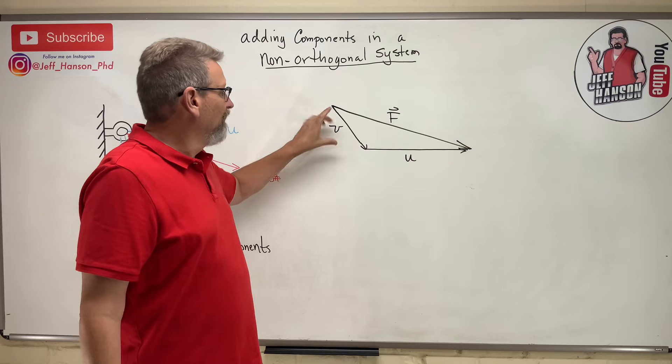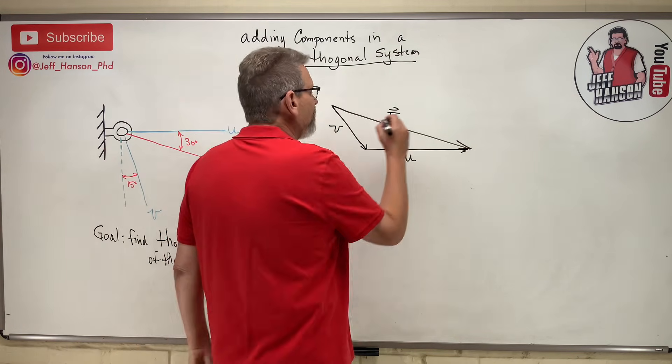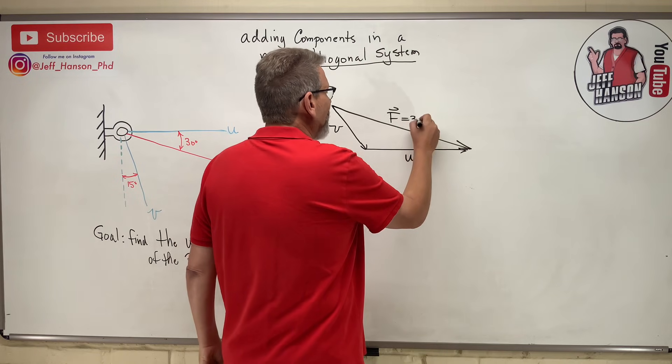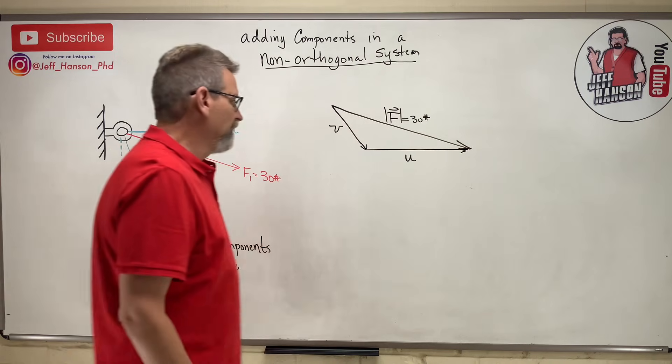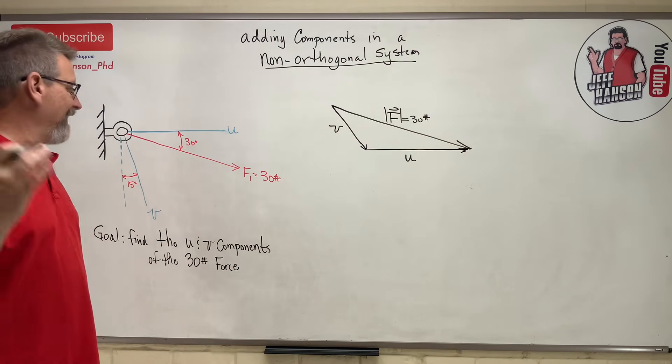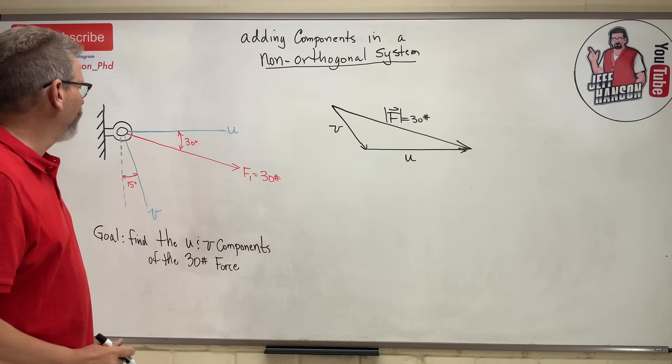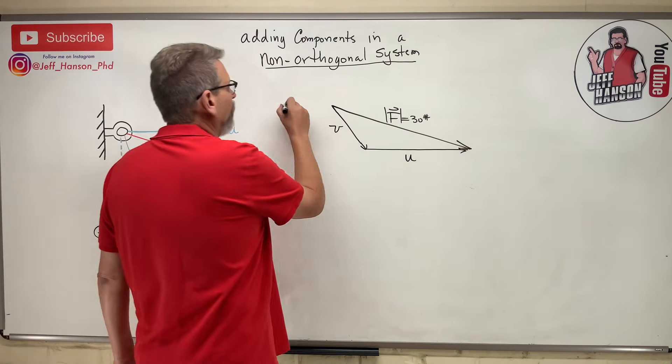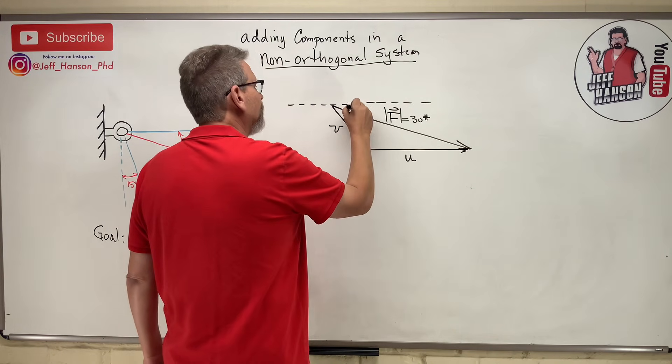So now all that's left to do - we know that the magnitude of this side here is 30 pounds, but we don't know anything else. It would be nice if we knew some angles. Well, we might know some angles, don't we? Let's see, from horizontal I know that this thing was given as 30 degrees, and this angle straight down here is given as 15 degrees.